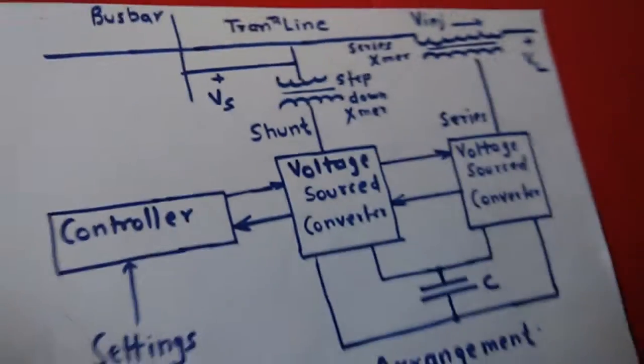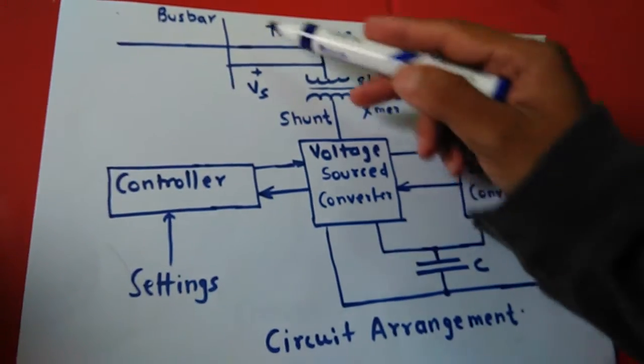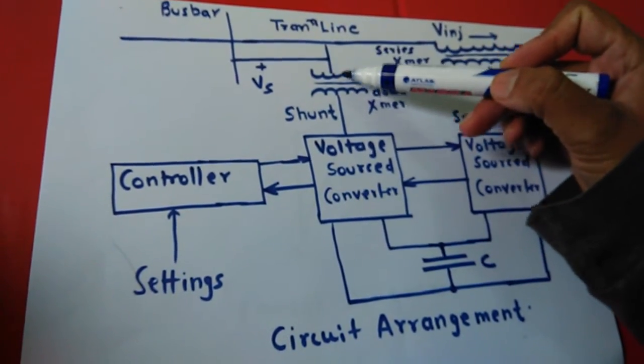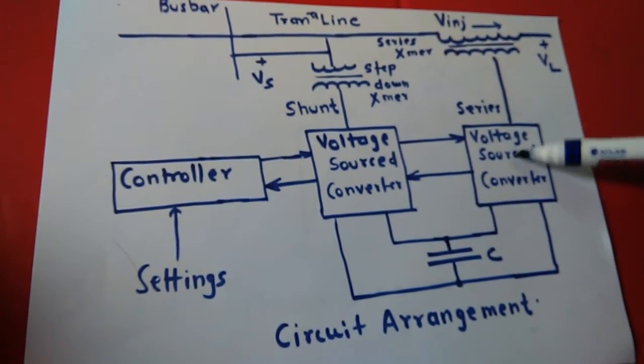This is the circuit arrangement of UPFC. Here is the transmission line which has bus bar and this bar is connected with the transformer to voltage source converter shunt and voltage source converter series.